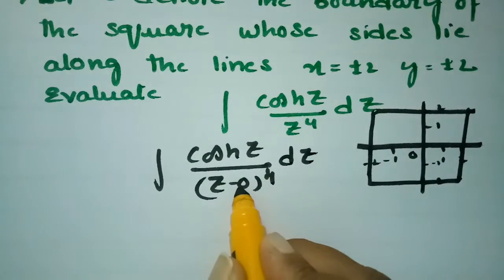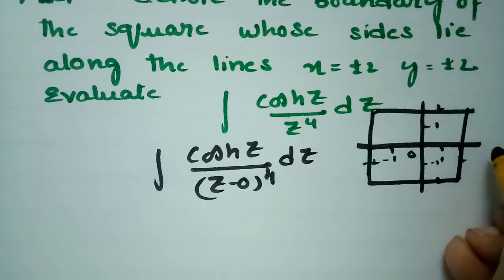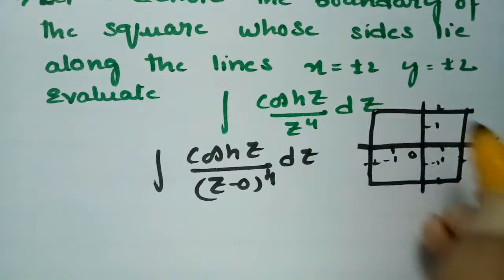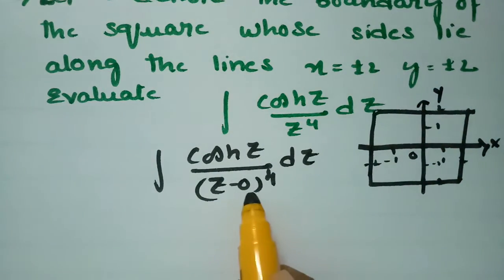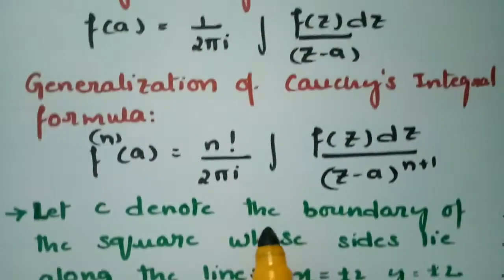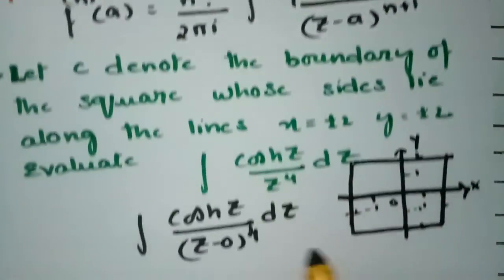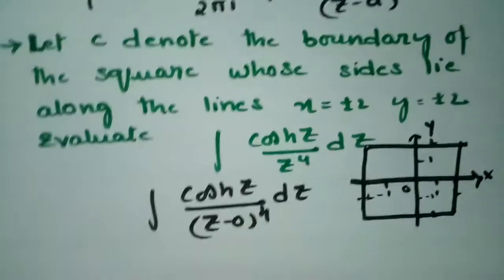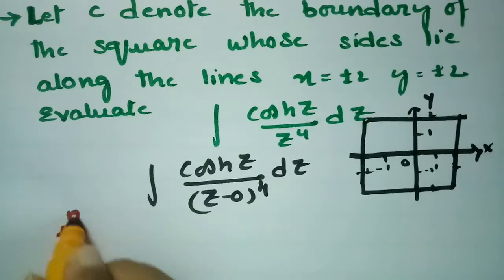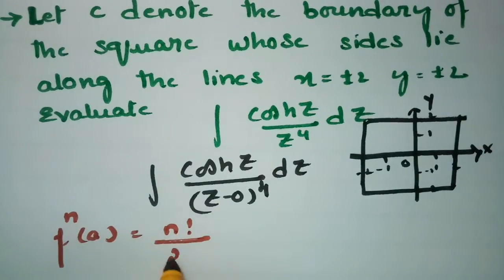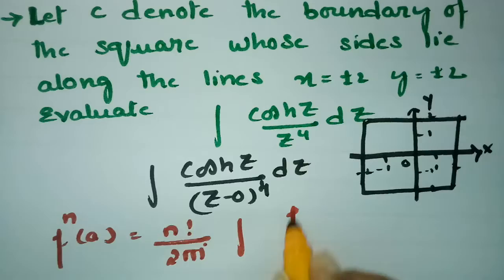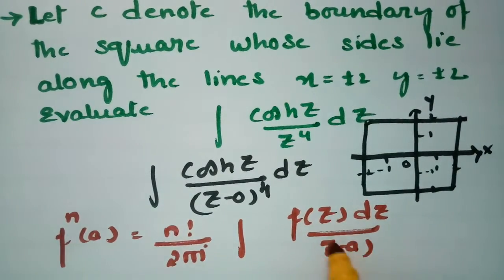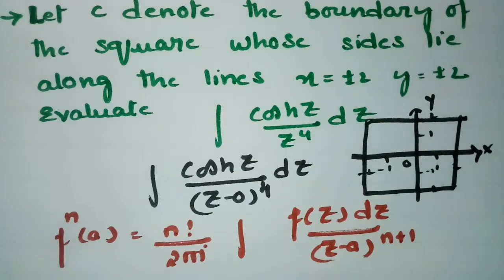The point here is z = 0, and 0 lies within this contour — within the square. So we can directly apply Cauchy's integral formula. The generalized formula is: f⁽ⁿ⁾(a) = (n! / 2πi) ∮ f(z) dz / (z − a)^(n+1).